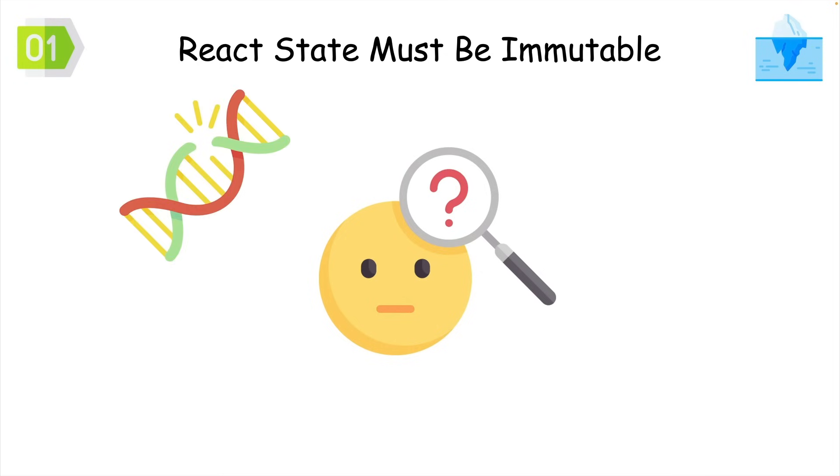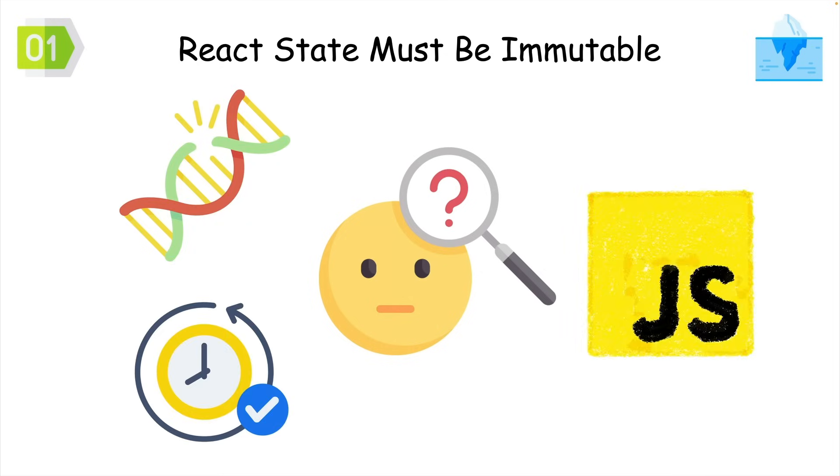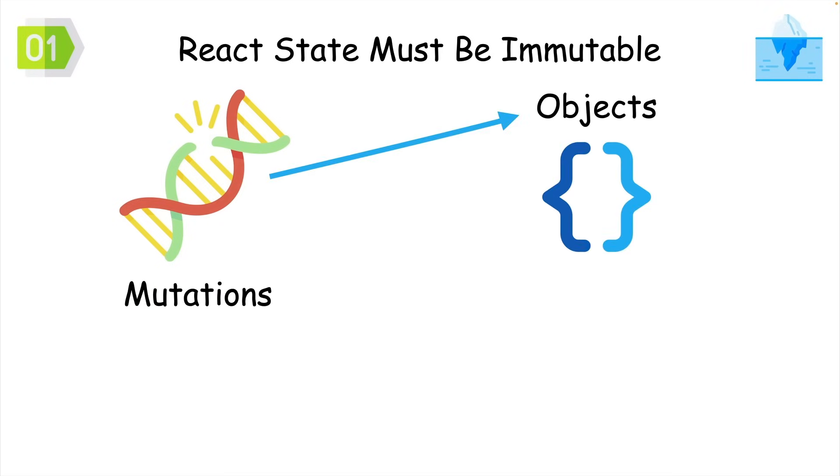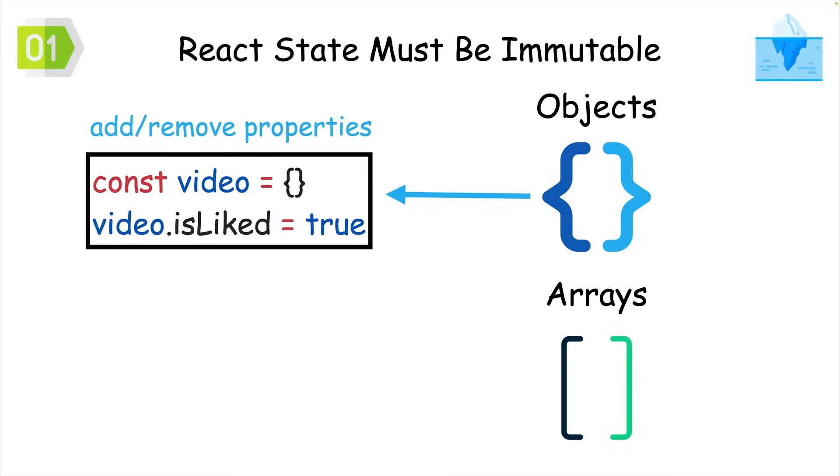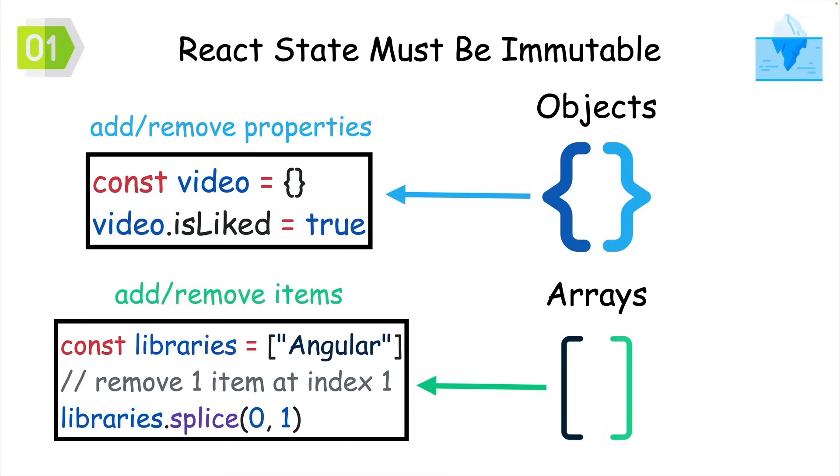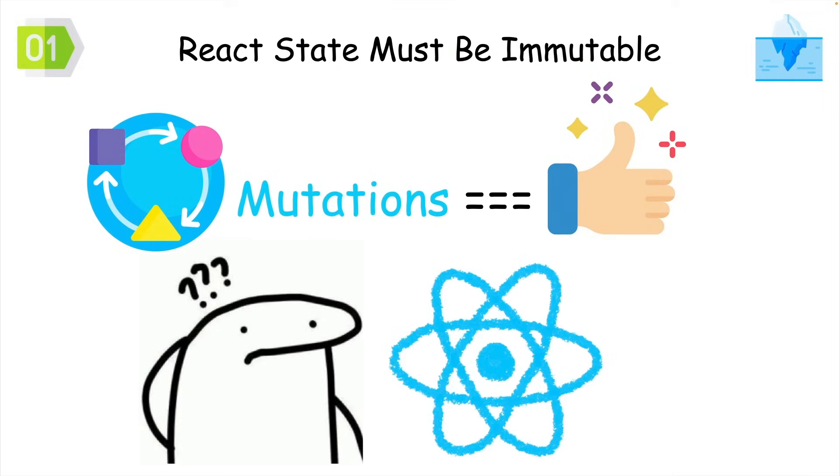But that's weird because we mutate data all the time in JavaScript. We do a lot of mutations with objects and arrays in particular. We mutate objects by adding or removing properties, and we mutate arrays by adding or removing array items. There's nothing wrong with mutations, so why does React try to tell us we can't mutate data?